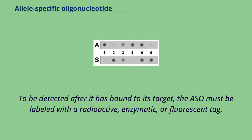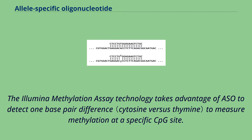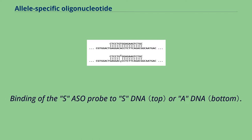To be detected after it is bound to its target, the ASO must be labeled with a radioactive, enzymatic, or fluorescent tag. The allele-methylation assay technology takes advantage of ASOs to detect one base pair difference to measure methylation at a specific CpG site, through binding of the S-ASO probe to S-DNA or A-DNA.